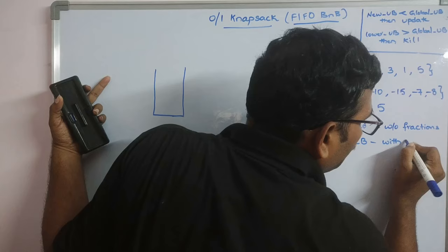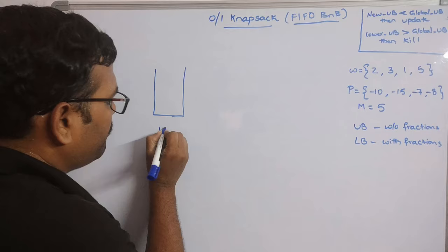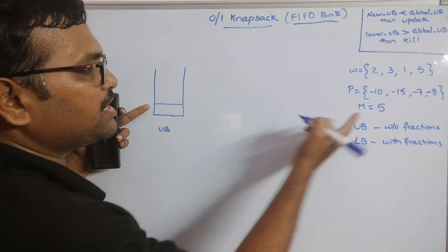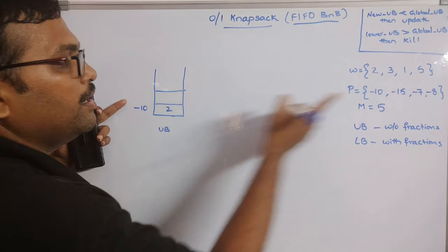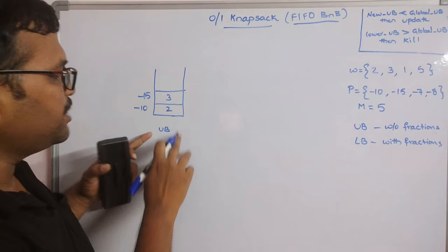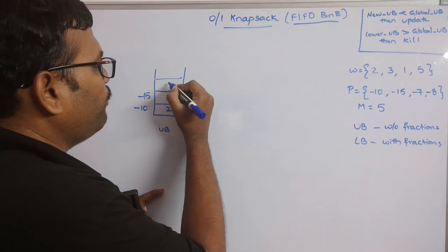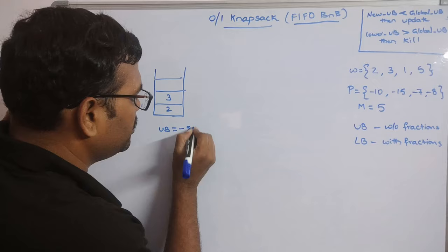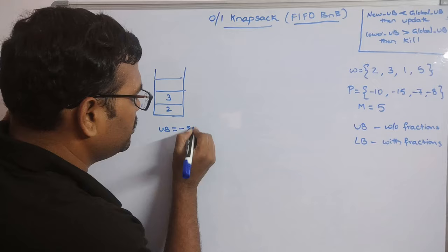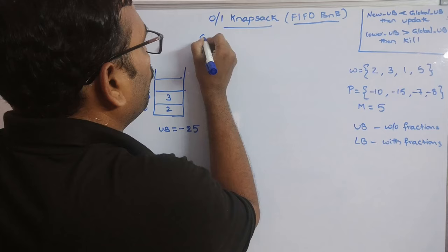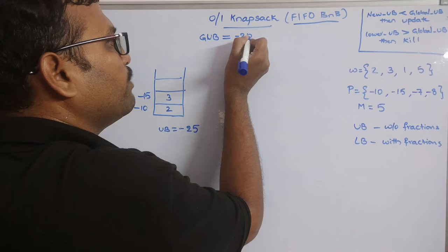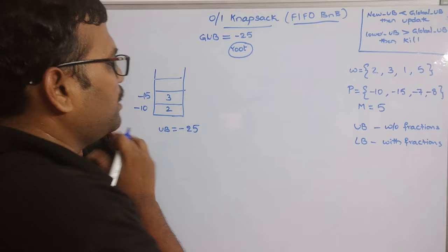Upper bound is without fractions, lower bound is with fractions. To find the initial global upper bound: insert the first element (weight 2, profit -10), then the second element (weight 3, profit -15). The knapsack weight becomes 5. We can't insert the third element since it would exceed capacity. So the upper bound value is -25, and we initialize the global upper bound as -25.